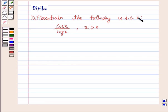Differentiate the following with respect to x: cos x upon log x, where x is greater than 0. So let's start the solution.